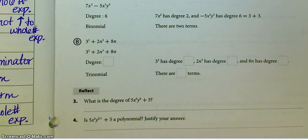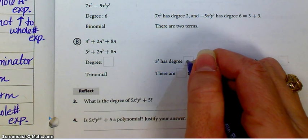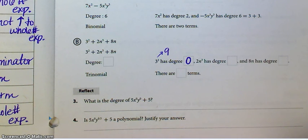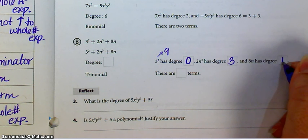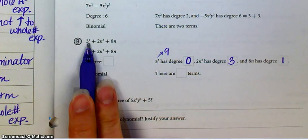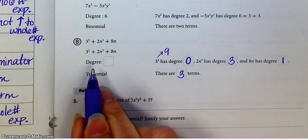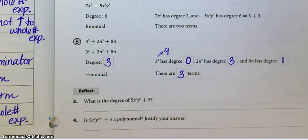On example B, you have 3² + 2n³ + 8n. Be careful here — 3² is really just 9, so 3² has a degree of 0 because that's really just a number. 2n³ has a degree of 3. 8n has a degree of 1. There are three terms, that's why it is a trinomial. This is a third degree trinomial, because you go with the degree of the highest term.